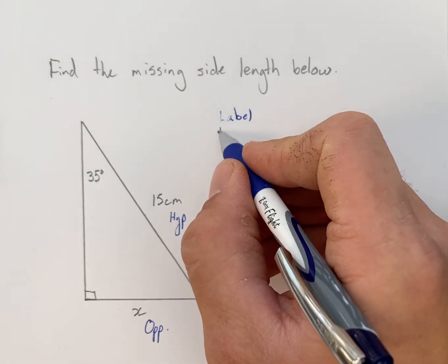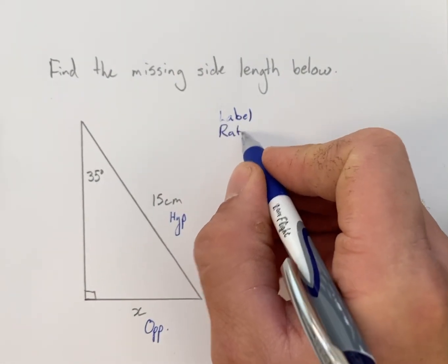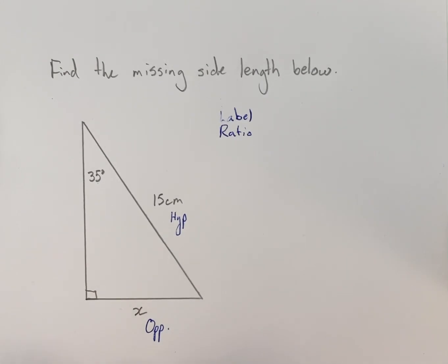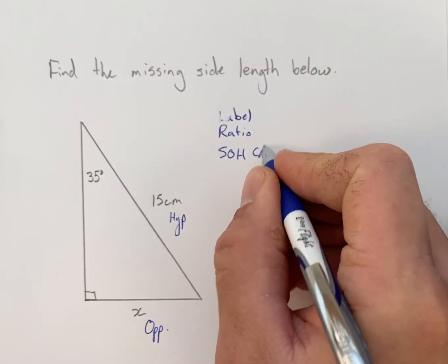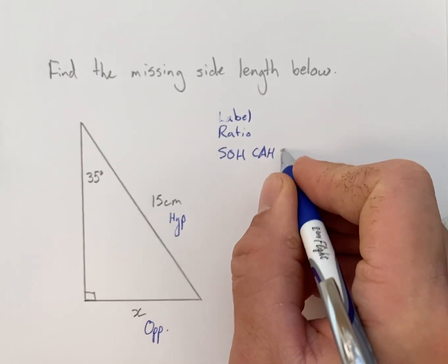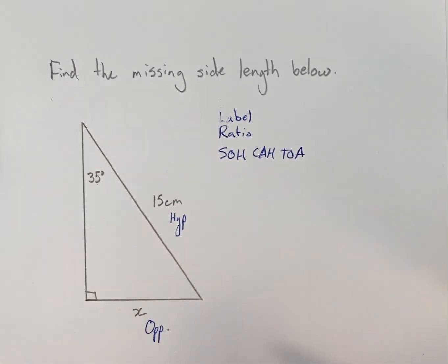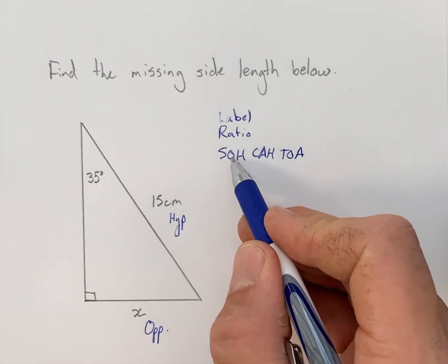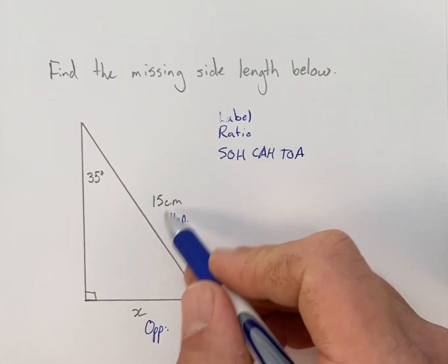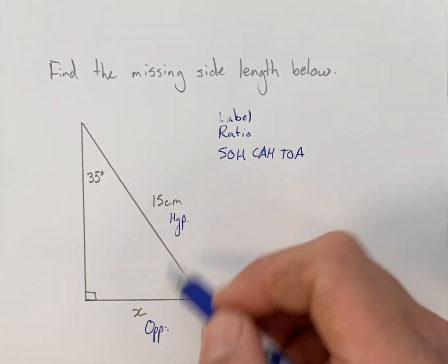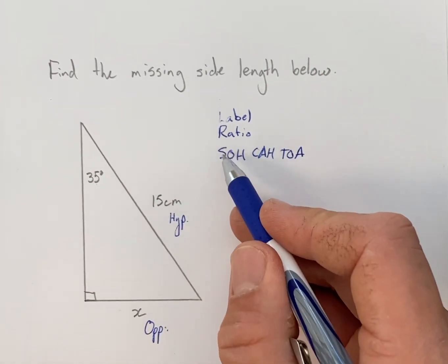Next we're going to pick the appropriate ratio. Remember when working with trigonometry we pick ratios using SOHCAHTOA. Because we have the opposite and the hypotenuse involved in our given or required information, we're going to use the sine ratio.